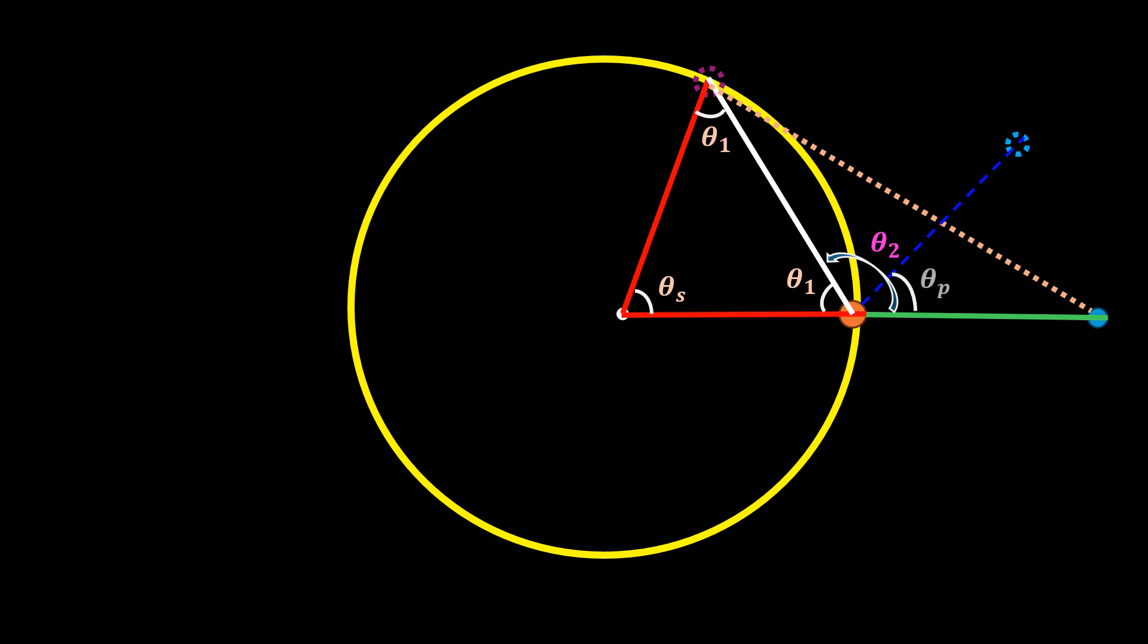So, we see that the effective angle between the chord and the Earth theta is equal to theta 2 minus theta p. Since the green line and the red line are parallel, the angle between them is 180 degrees. This means that theta 2 is equal to 180 minus theta 1.